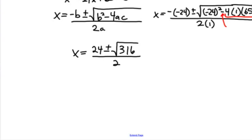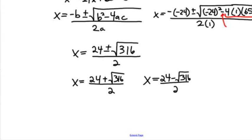So I have 24 plus or minus the square root of 316 divided by 2. So that means I have x equals (24 + √316)/2 or x equals (24 - √316)/2. Now that gives me two separate answers.